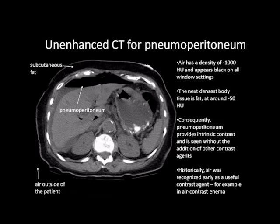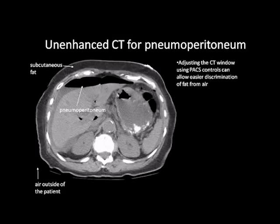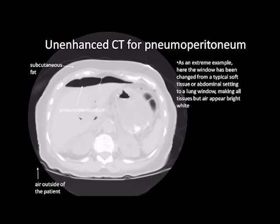Adjusting the CT window using PAX controls can allow easier discrimination of fat from air. On a typical abdominal window, air is completely black and fat is quite dark, almost black. Increasing the brightness and contrast makes the fat appear brighter while air appears quite black. As an extreme example, the window has been changed from a typical soft tissue or abdominal setting to a lung window, making all tissues but air appear bright white.